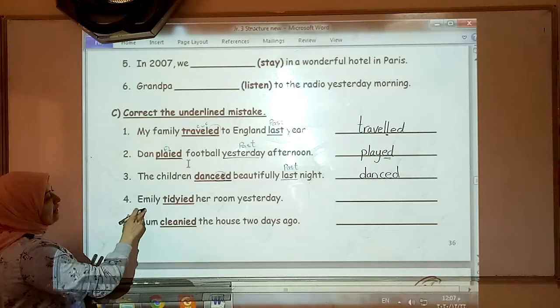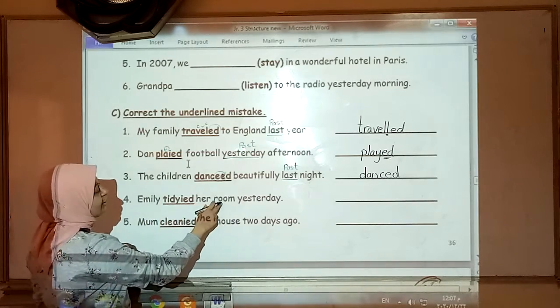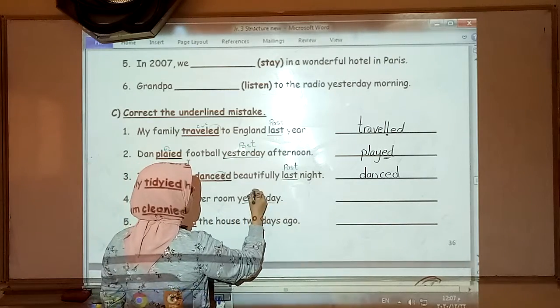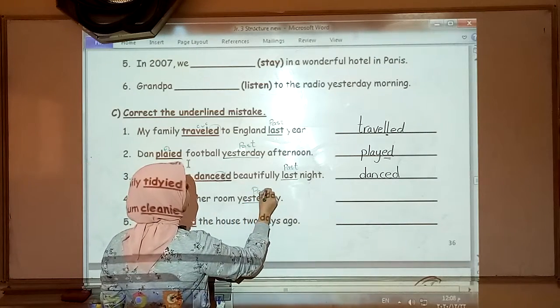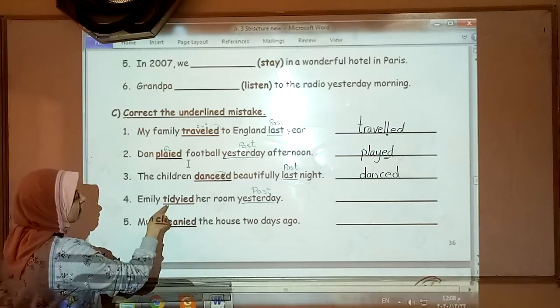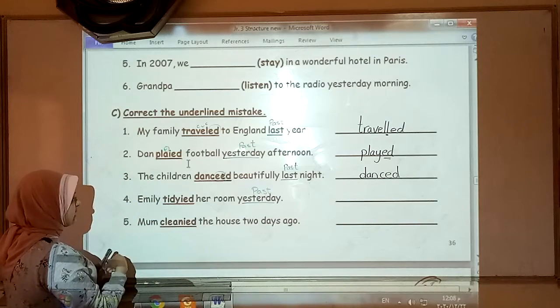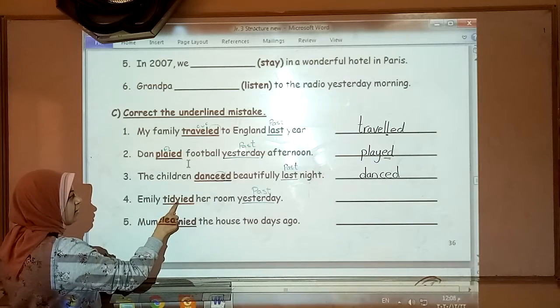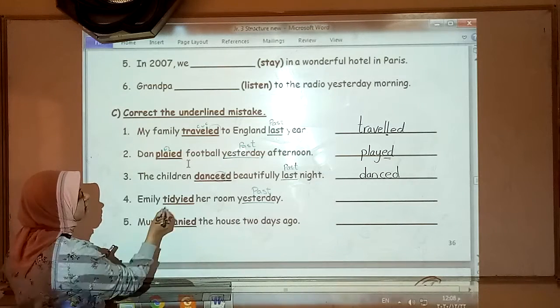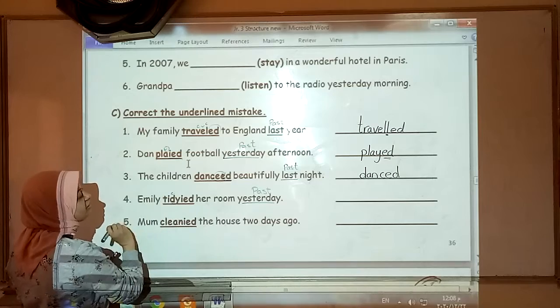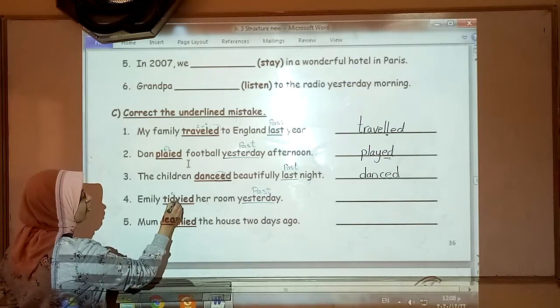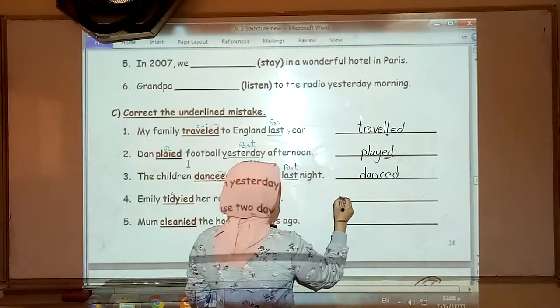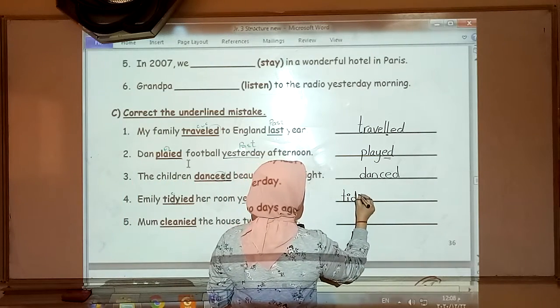Number four. Emily tidied her room yesterday. Keyword, yesterday, past. Tidied. What can we see here? IED at the end of the verb. Y before it. And before the Y we have a consonant letter. So the Y should be crossed. IED.